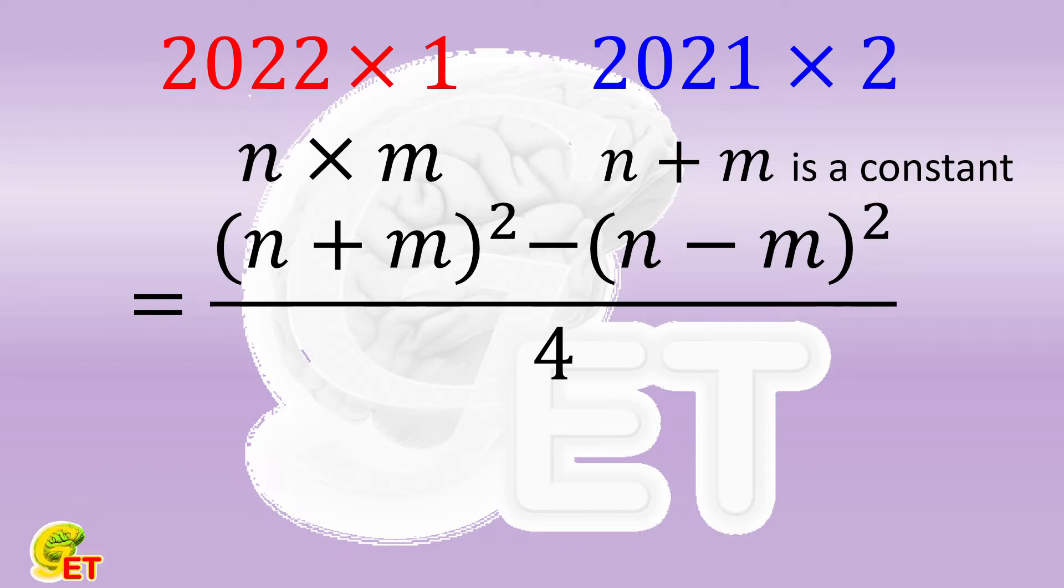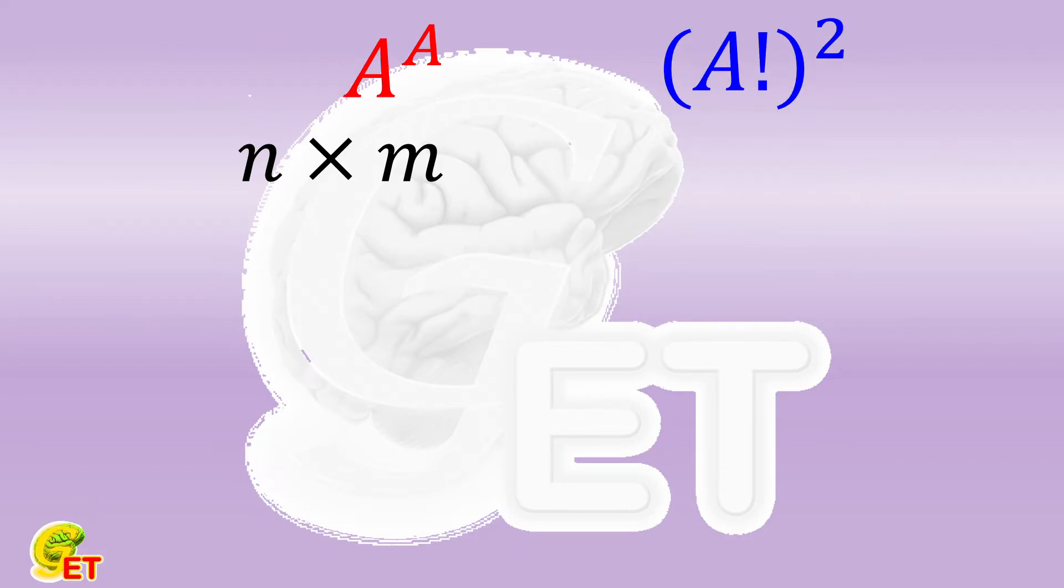For any natural number A, between A to the A power and the square of factorial of A, which one is bigger? In this case, the summation of n plus m is fixed at A plus 1.